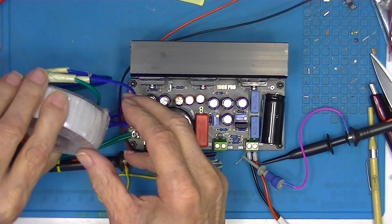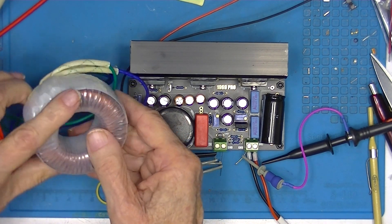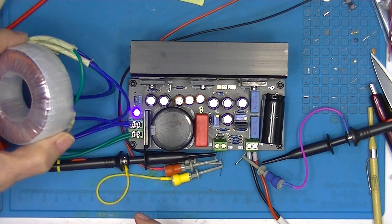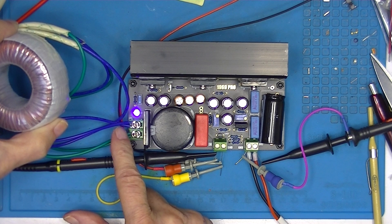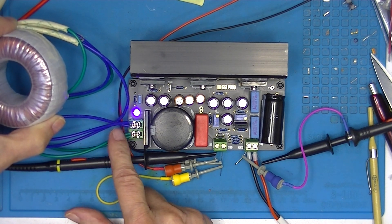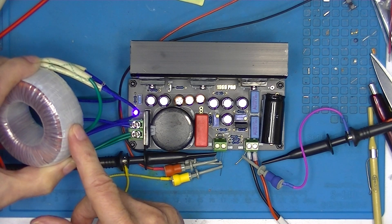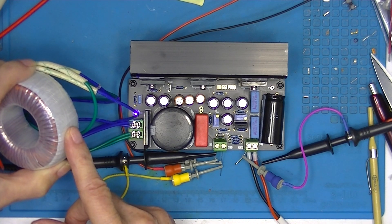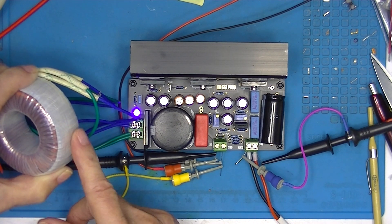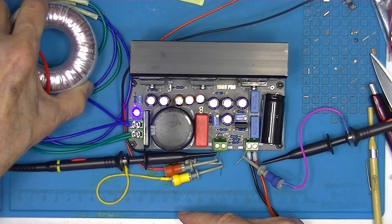If this transformer were rated 50 VA, I could deliver considerably more than an amp, and I would have two coils each at 15 volts. So if I had a 50 VA transformer, I could supply both amplifiers.